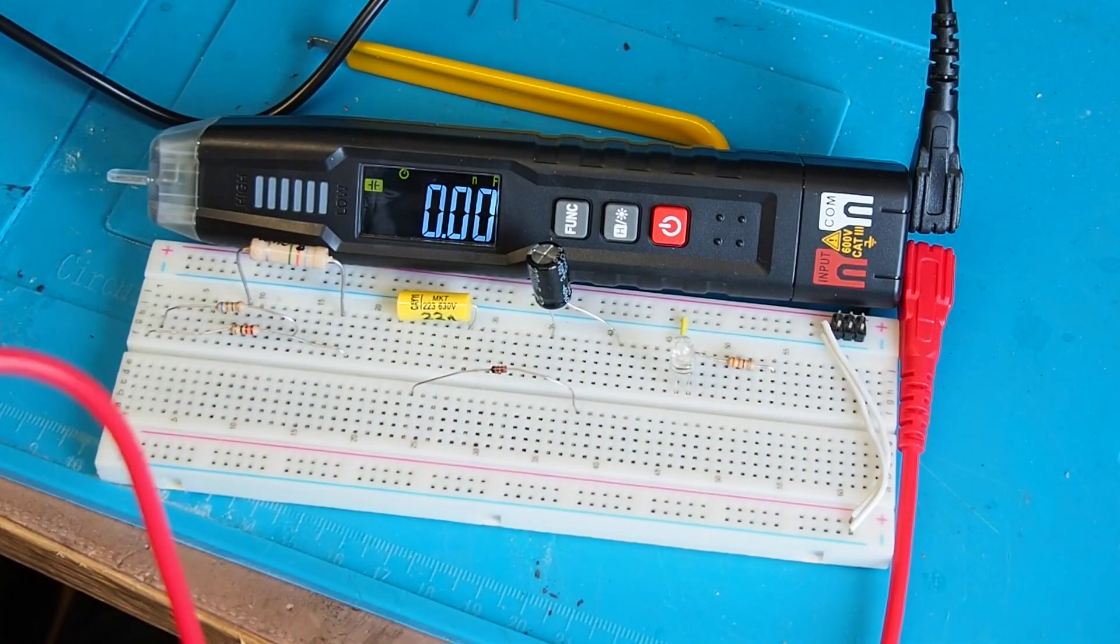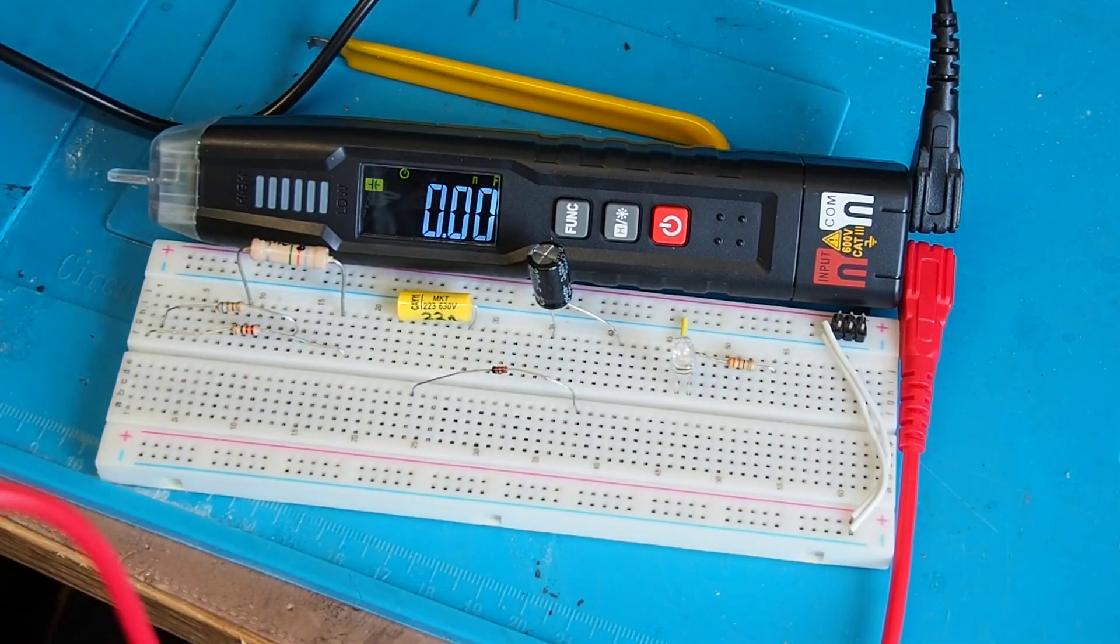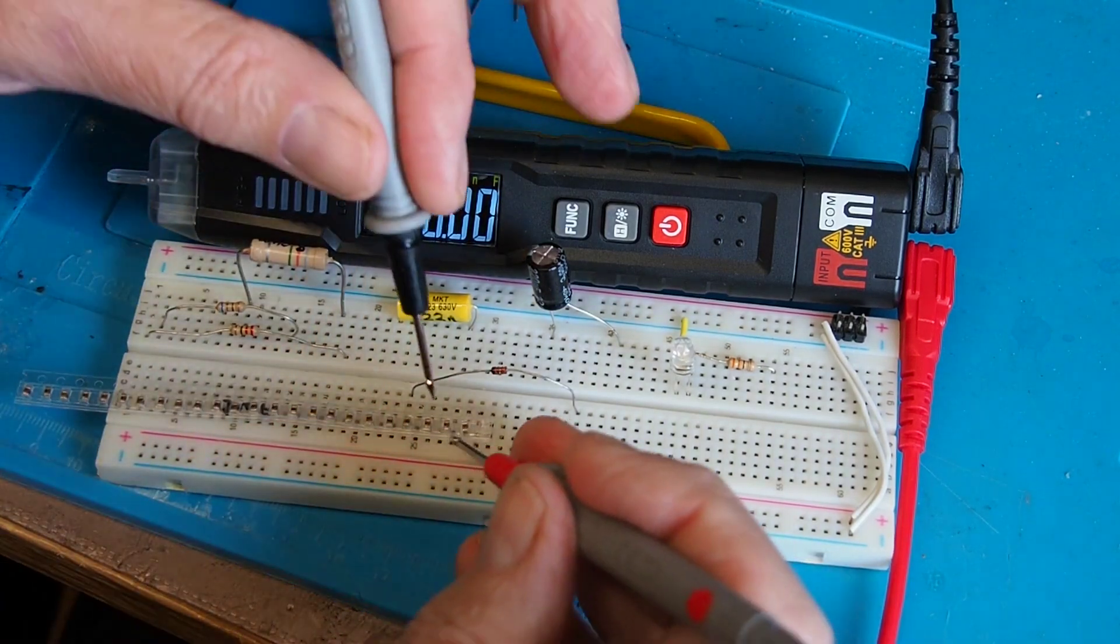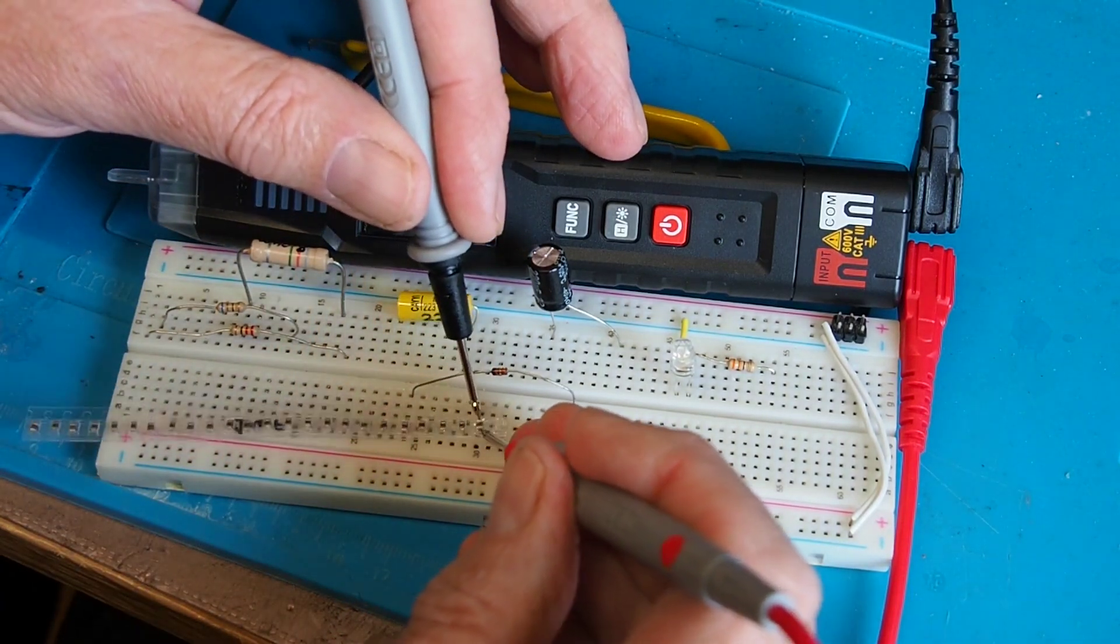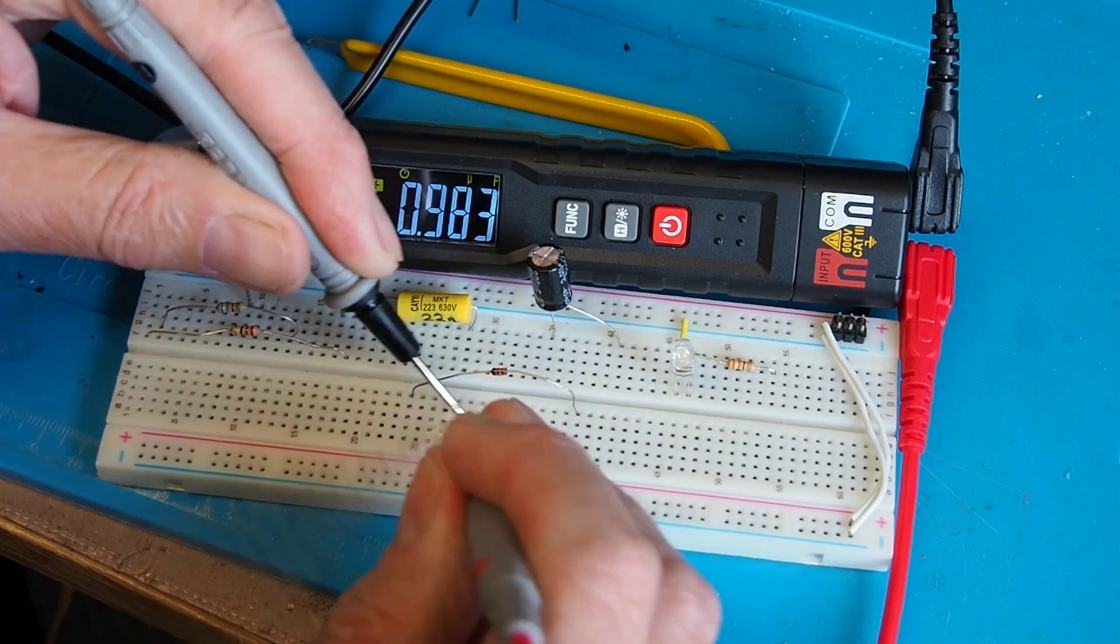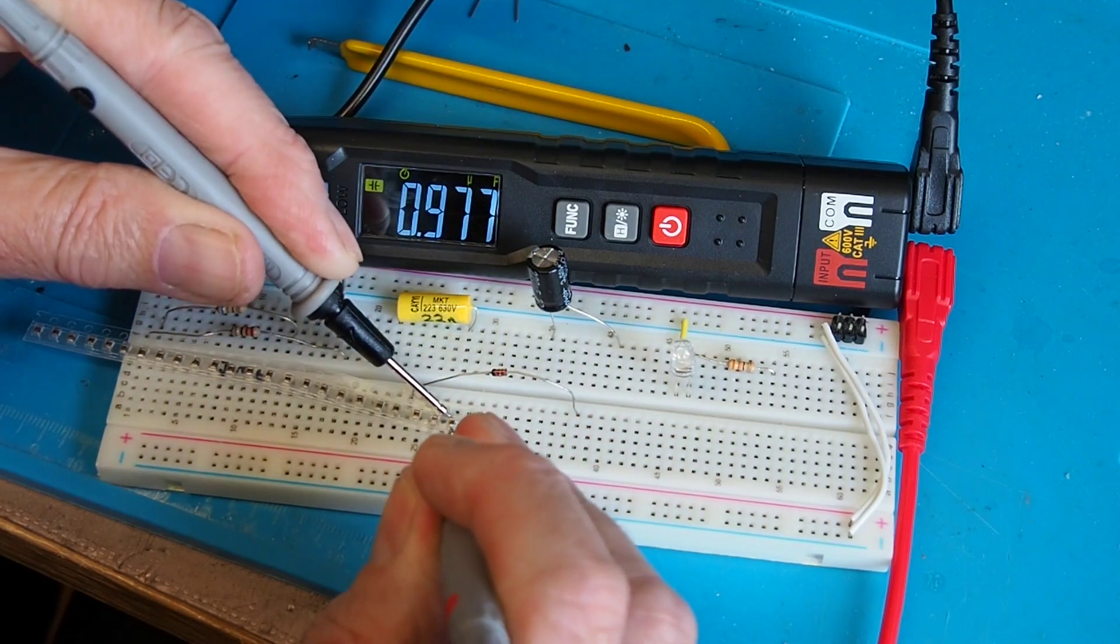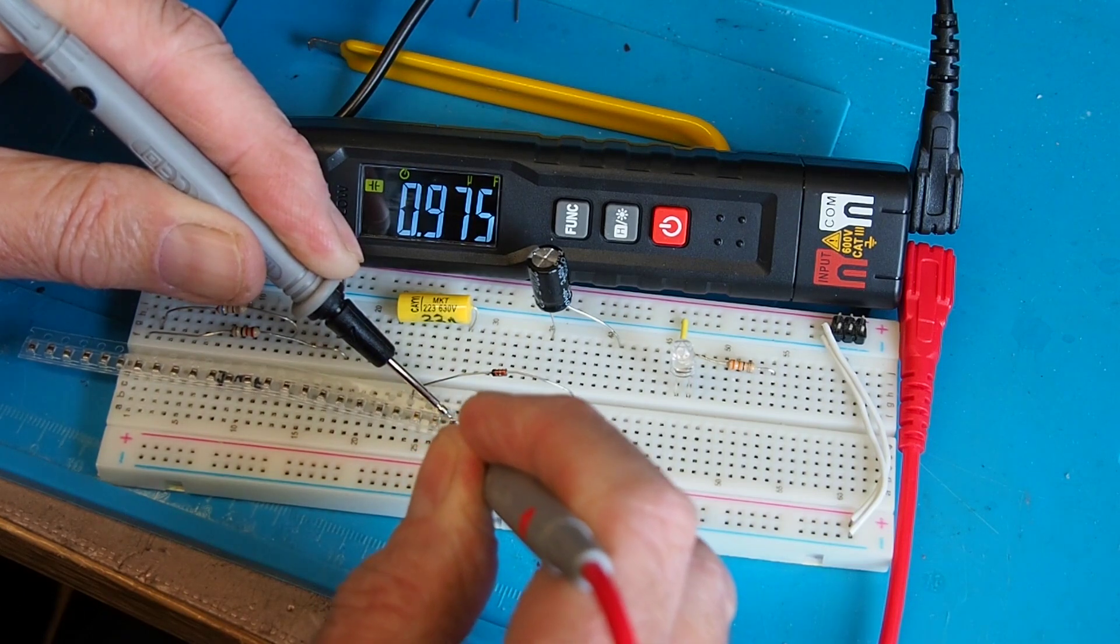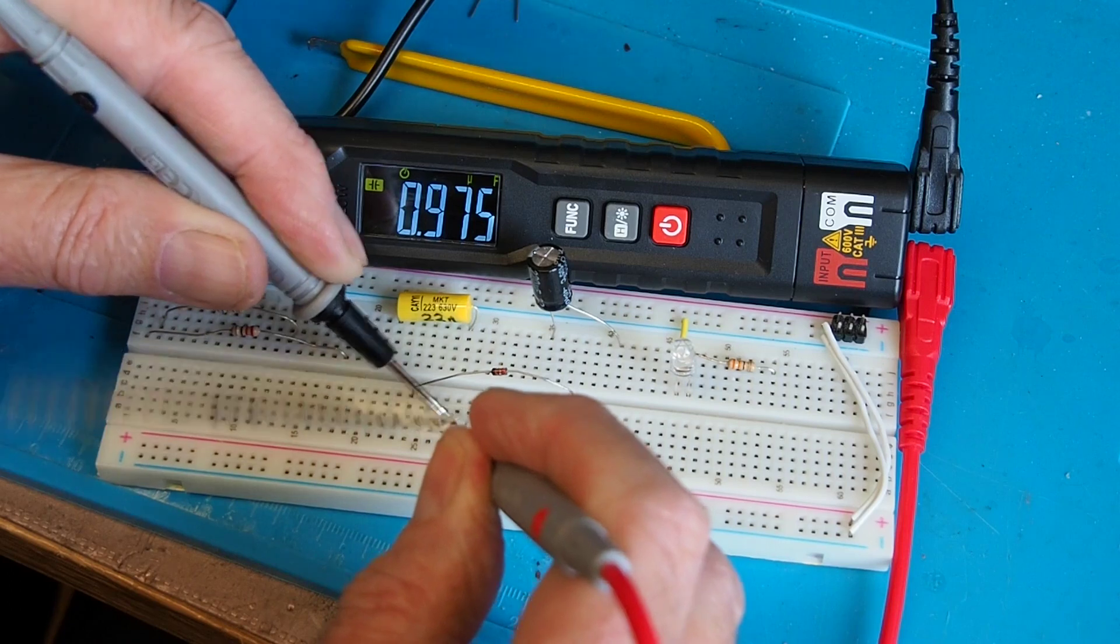Just for a bit of a challenge I've got some one microfarad surface mount capacitors here which my eyes can barely see, but hopefully we can get the display to show 0.976 microfarads. It's supposed to be one microfarad. I think that's pretty good.